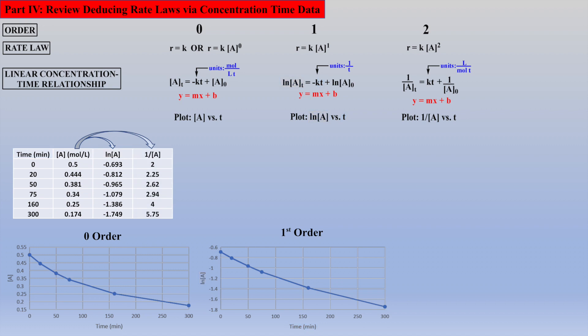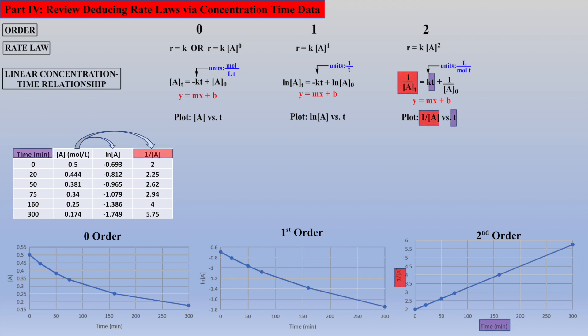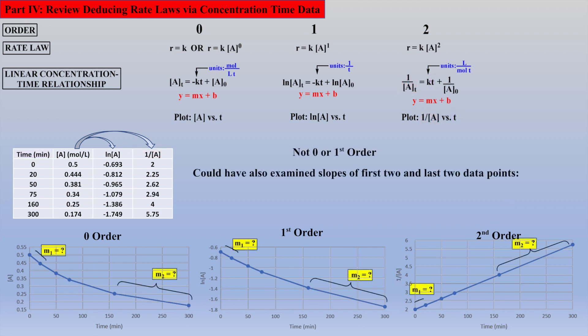Next, if we take the reciprocal of the concentrations and plot 1 over the concentrations versus time, we should generate a straight line if the reaction follows second-order kinetics, which it does. Alternatively, one could calculate the slopes of the first two and last two data points. If the two slopes are not equal, then it is not a linear plot, which is much quicker to accomplish. This easier method eliminates zero- and first-order kinetics for this reaction.